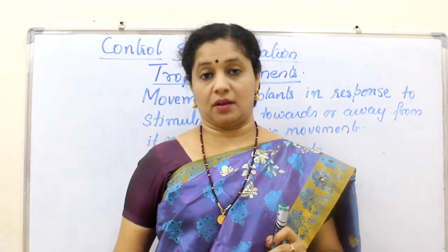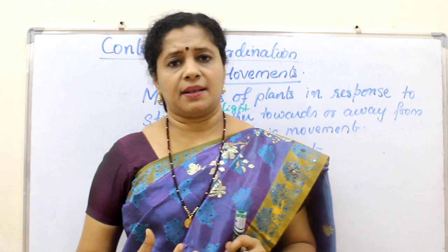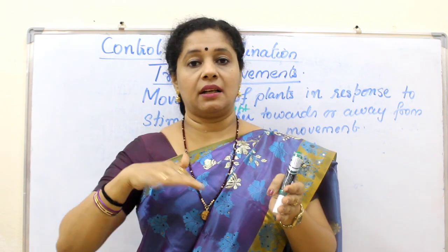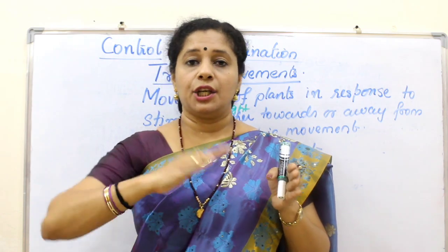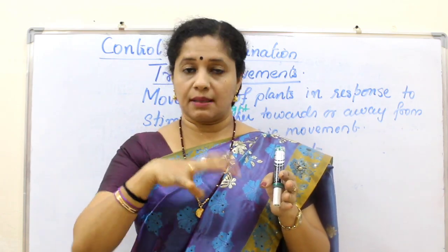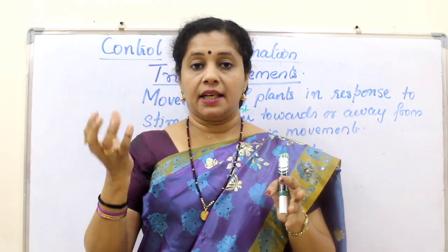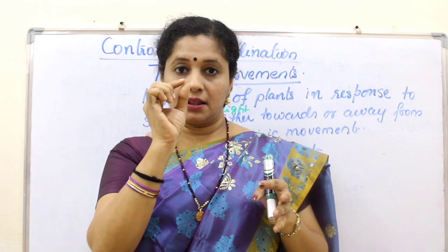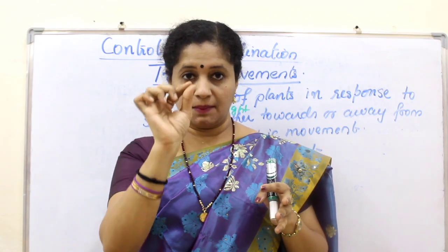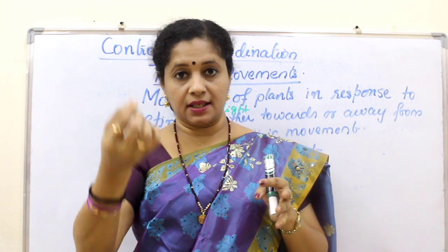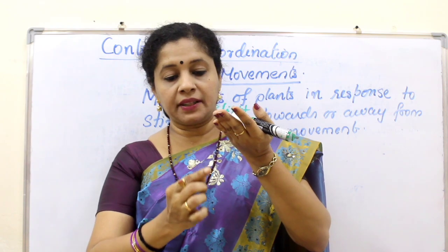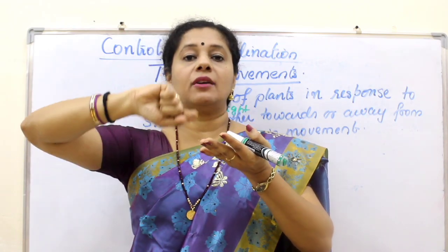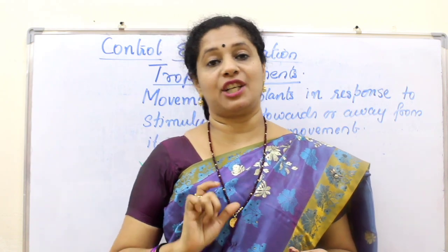Coming to hydrotropism — we know roots obviously grow towards water. To demonstrate this, take a sieve plate — a plate with mesh-like holes — and put a layer of sawdust or cotton on it which can retain moisture. Soak seeds and distribute them on the sieve plate so they can germinate. Initially, the radicle — the root part of the embryo — will grow downward through the pores of the sieve plate. But after coming down, it realizes there is no water below because the water is in the sawdust or cotton above. So it bends back and grows towards the water source. This demonstrates positive hydrotropism.